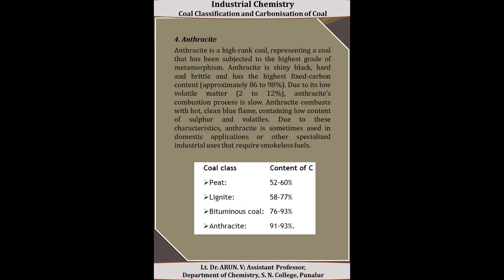The final type is anthracite, a high-rank coal that has been subjected to the highest grade of metamorphism. Anthracite is shiny, black, hard, and brittle, with the highest fixed carbon content of approximately 86 to 98%. Due to its low volatile matter of around 2 to 12%, the anthracite combustion process is slow. It combusts with a hot, clean blue flame containing low content of sulfur and volatiles, making it suitable for domestic applications or specialized industrial uses requiring smokeless fuels.